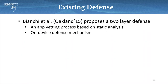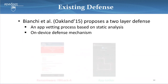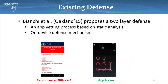Bianchi proposed a two-layer defense to defend against a GUI confusion attack. The method uses static analysis to vet the application for suspicious behavior, and they also proposed an on-device defense mechanism. However, one difficulty is that it is sometimes hard for code analysis to really interpret the intention of a program. For instance, two apps may have the exact same behavior of locking the screen — but the left one is ransomware, whereas the right one is a useful app locker.